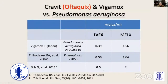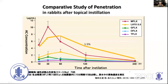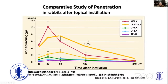Another report confirms levofloxacin is more sensitive than moxifloxacin. In a comparative penetration study in rabbits after topical instillation, looking at anterior chamber concentration from a single dose, moxifloxacin and levofloxacin 1.5 percent are nearly equal, but levofloxacin 1.5 percent achieves higher concentration in the anterior chamber than levofloxacin 0.5 percent.